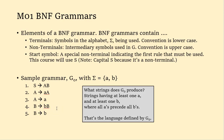What strings does this produce? The language this grammar describes is the set of all strings composed of A's and B's where all the A's precede all the B's, and you have at least one A and at least one B.